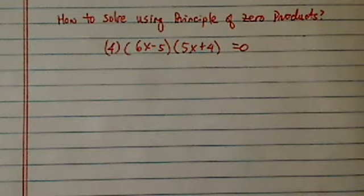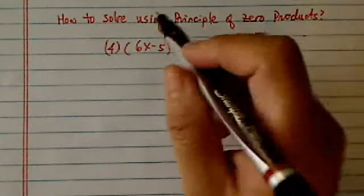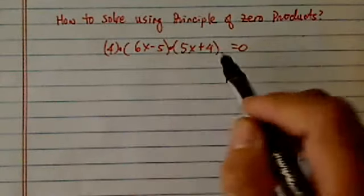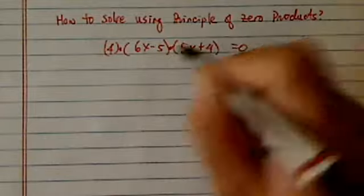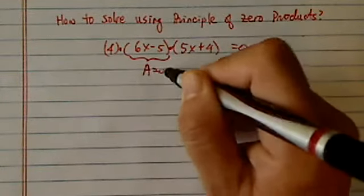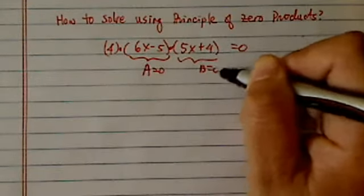Principle of Zero Products really is just a fancy way to say, look, when you have multiplication with each one of the parentheses, in order for these three chunks to equal zero, there's only two choices: either chunk A equals zero or chunk B equals zero.